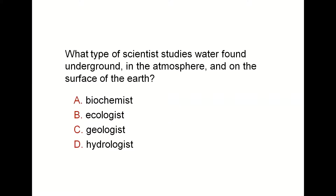What type of scientist studies water found underground? The scientist who studies water — wherever it is, underground, in the atmosphere, or on the Earth's surface — is a hydrologist. The keyword is water, which relates to 'hydro.' A geologist studies the Earth's structure, an ecologist studies how organisms interact, and a biochemist studies the chemical reactions and biochemical pathways within living things.